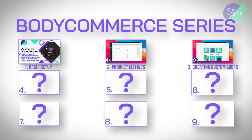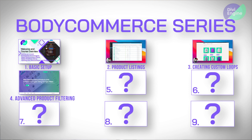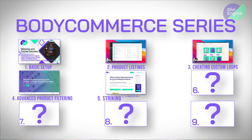Super simple to do. Then we'll move on to advanced product filtering, where we're going to be using the Divi Ajax filters built into Divi Body Commerce, showing those products and allowing users to filter them quite easily on the page. What is an e-commerce site without striking product pages? We're going to be looking at all the different modules built into Body Commerce that'll help you build the perfect product page — those single product pages.